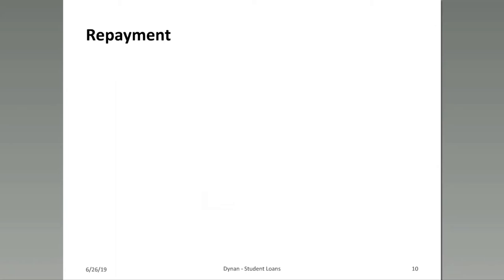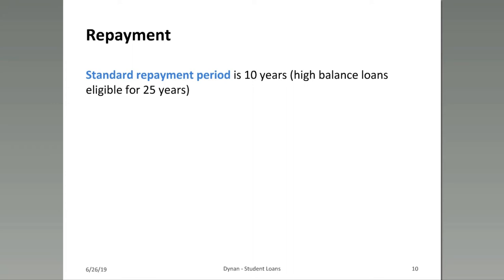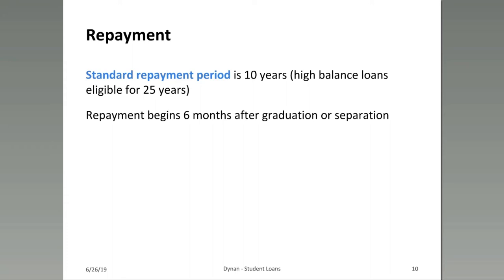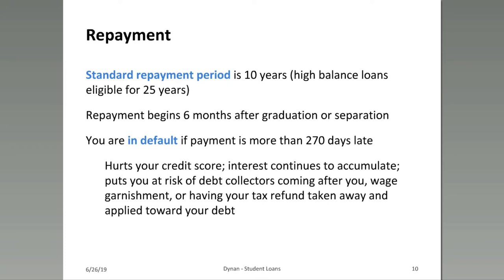The standard repayment period on student loans is 10 years, with a six-month grace period after graduation before repayment begins. You're in default if you're more than 270 days late. Bad things happen when you default: it hurts your credit score, interest continues to accumulate, and you're at risk of debt collectors, wage garnishment, and having your tax refund taken away.